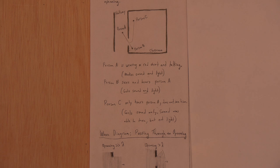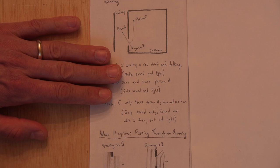So person C gets the sound only. The sound was able to turn, but the light was not. Why? Is it just because sound diffracts or curves and light does not? No, light diffracts also. But for this given situation, the light does not diffract. To understand why, I have a series of diagrams here.